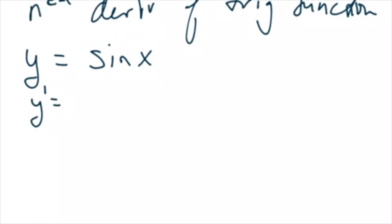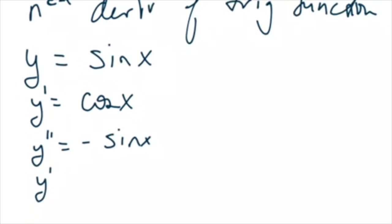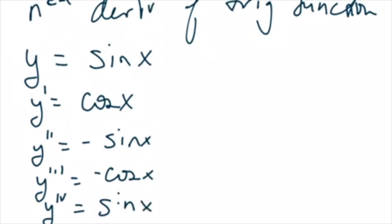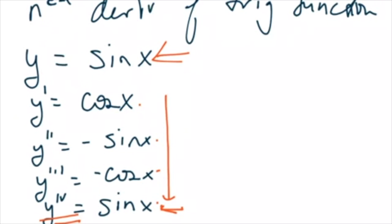What you want to do is just start off by getting the pattern going. The derivative of sine is cosine, derivative of cosine is negative sine, derivative of that is back to cosine — the negative is hanging around — and the fourth derivative of cosine brings me right back to sine of x. So notice the pattern: I'm right back to the sine function every four derivatives. First, second, third, fourth derivative — I'm back to the original function, which means there's a cycle.